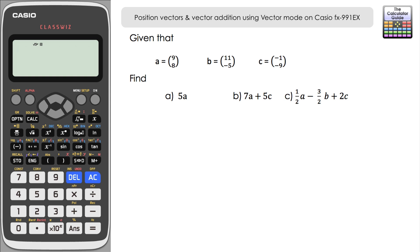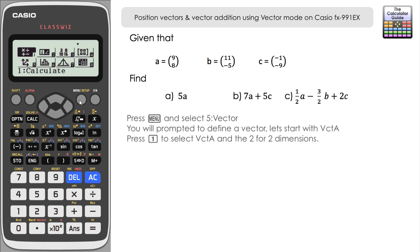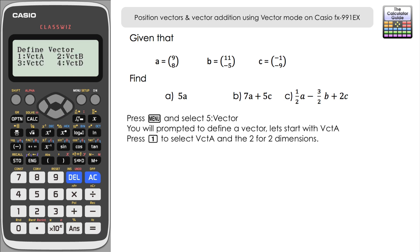Let's take a look at the first question. We've got three vectors a, b, and c given as column vectors. We need to find 5a for part a, then 7a plus 5c for part b, and for part c we need to find half a minus three over two b plus 2c. To access vector mode on the calculator, press Menu and navigate down to 5 for vector, then press equals.